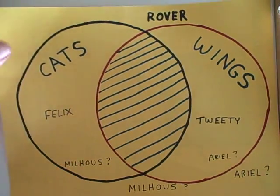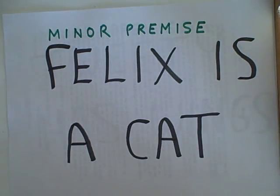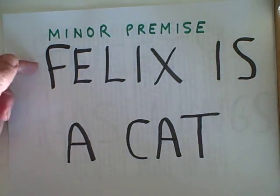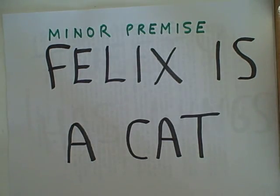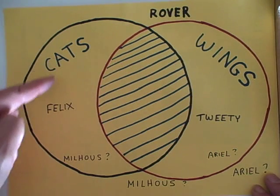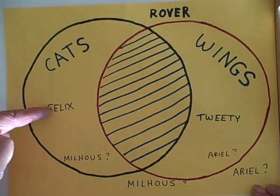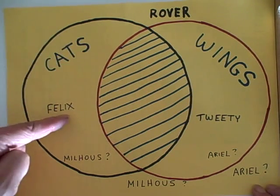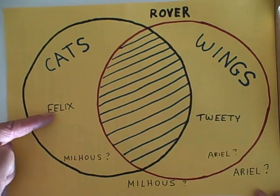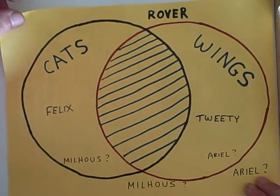Now let's take a look at a minor premise from which we may derive a valid conclusion: Felix is a cat. We know where Felix is going to fit on this diagram — Felix is going to be in the cat crescent over here. Therefore, what can we conclude? Felix does not have any wings.